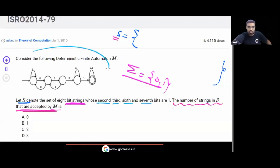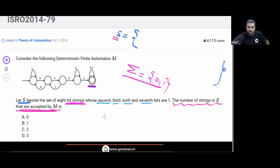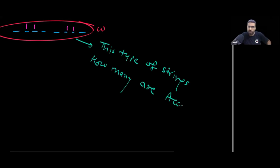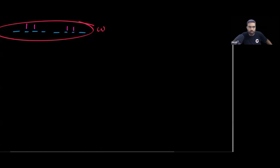This type of question can be solved using the DFA very easily. We already know that positions 2, 3, 6, and 7 must be 1. So we are looking for strings of this fixed structure. Our focus is on how many of these type of strings are accepted. In the first position, we have a free choice — we can put 0 or 1.